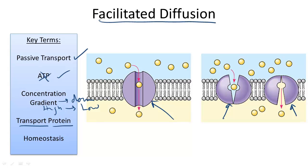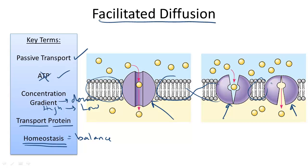The purpose of facilitated diffusion, as with any method of cell transport, is to maintain homeostasis or balance in the body. Here we have a phospholipid bilayer streaming across the cell and two pictures of facilitated diffusion.